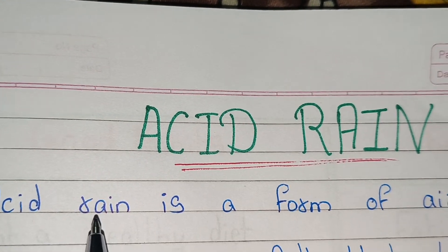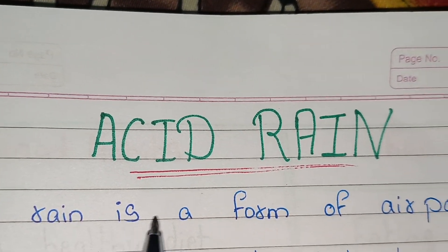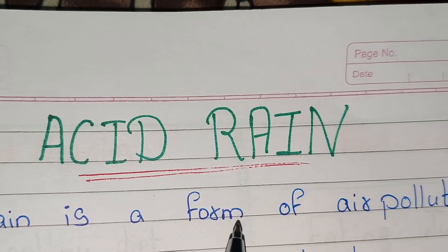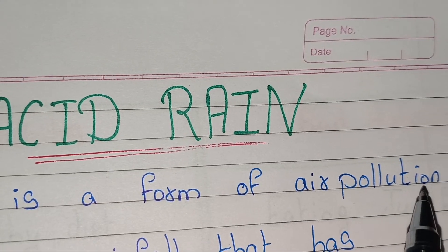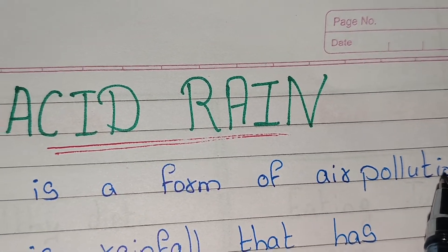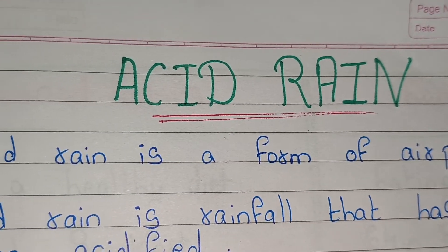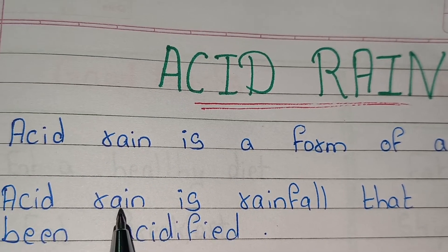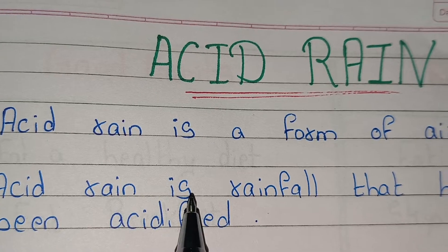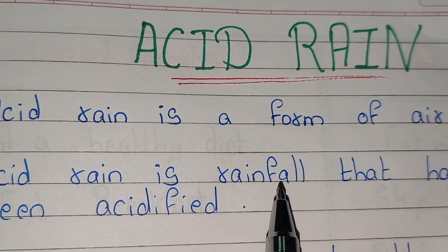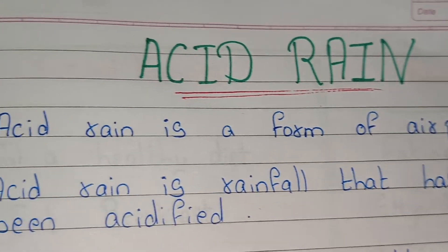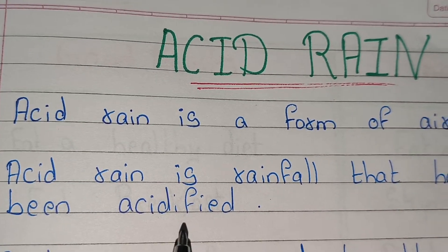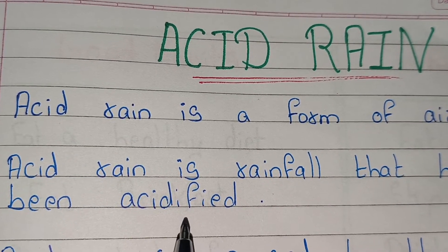Acid rain is a form of air pollution. Acid rain is rainfall that has been acidified.